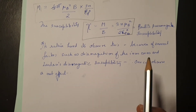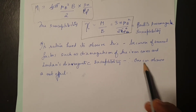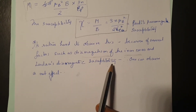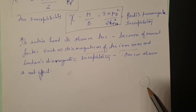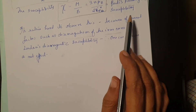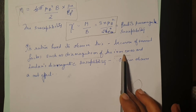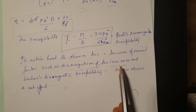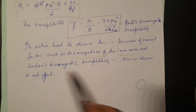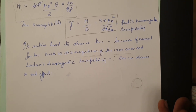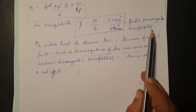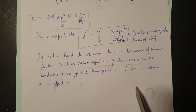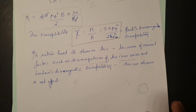Pauli's paramagnetism is very difficult to observe experimentally, because it is masked by other effects: diamagnetism from the ion cores and Landau's diamagnetic susceptibility, both arising from the orbital motion of electrons around the nucleus. These factors mask the paramagnetic susceptibility. Importantly, Pauli's paramagnetism is a key concept in superconductivity, where it is applied to the case of Cooper pairs. You are encouraged to read further on this topic. Thank you.